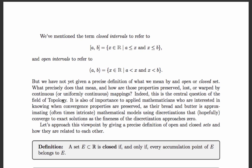And if I have one model, and I continuously warp it to another model, is this property of convergence maintained? So let's approach this viewpoint by first giving a precise definition of what we mean by an open and closed set of real numbers, and how they're related to each other.